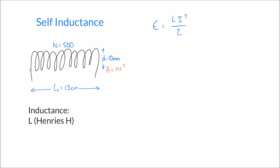For our example, let's say a current of 3 amps passes through the coil and we'll calculate the energy that results. Using the formula, L is the inductance we just calculated — 164.54 microhenrys, or 164.54 times 10 to the minus 6.